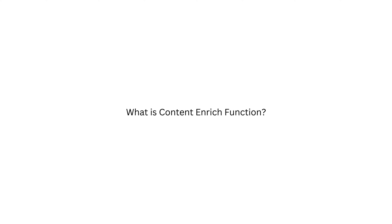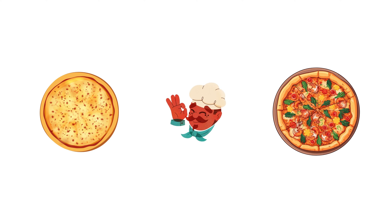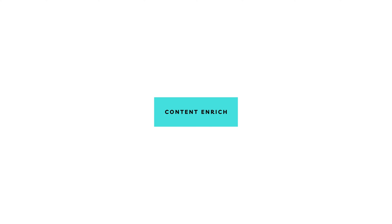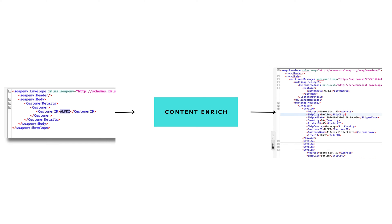Let's start by asking a question: what is the enrich function? Imagine when you go to a restaurant and order a pizza, you ask for toppings. When you add more toppings to the pizza, the pizza will be tastier and more delicious. Similarly, we use the enrich palette function to enrich the data coming in from the source systems. By using the enrich function, you can enhance the data and data structure in a given message.